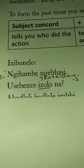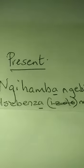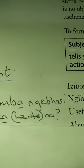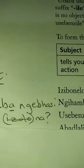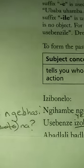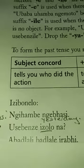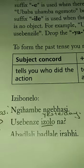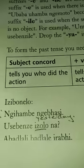Some examples here. Ngi hambe nge baasi — I go by bus. Past tense: I went by bus. Ngi hambe nge baasi.